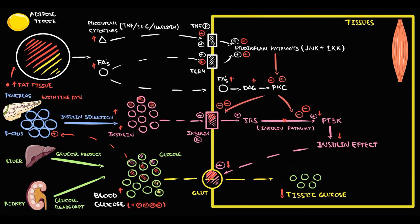With time, beta cell dysfunction develops, because nobody can work at their limits all the time. At some point, beta cells will no longer be capable of producing so much insulin. Without these additional insulin molecules, the organism can no longer overcome insulin resistance. As a result, insulin's effect on tissues decreases, and the extra glucose molecules stay in the blood. In the end, the person will have an increased blood glucose level and decreasing glucose delivery to the tissues.